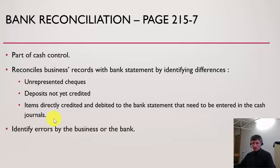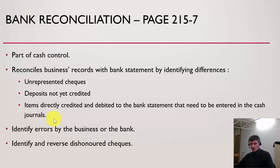Bank reconciliation also identifies errors from the bank or from the business perspective, and they need to be adjusted. Errors from the bank get adjusted on the bank reconciliation statement, and errors from the business get adjusted in the cash journals. We also have to identify and reverse any dishonoured checks — those are checks paid to us that have not had sufficient funds in the account and therefore need reversing and adjusting in our own cash records.